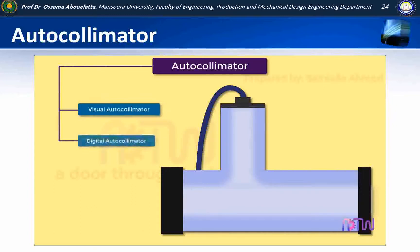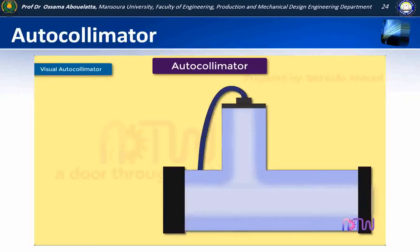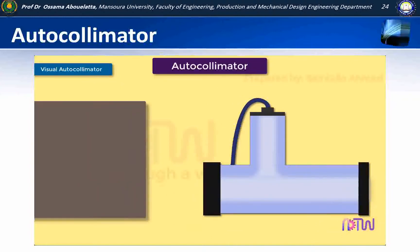A visual autocollimator can measure angles as small as one arc second, that is 4.85 microradians, while an electronic autocollimator can have up to 100 times more resolution. This video will cover the following about the visual autocollimator.